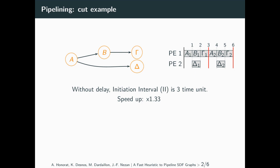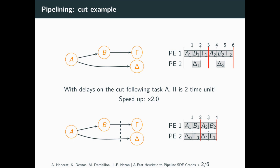Now, if you add delays on the graph cut located after the task beta, the dependencies to tasks gamma and delta are delayed until the next scheduled iteration, and the Initiation Interval is reduced to two time units, giving a speedup equal to 2. Note that, to be valid, a graph cut cannot cross cycles of the graph.